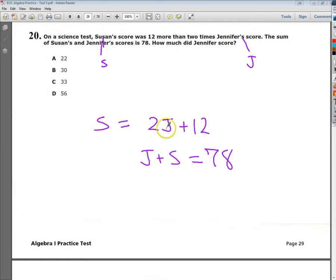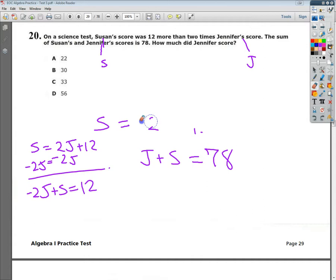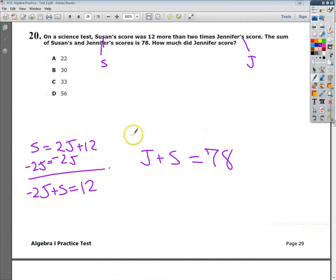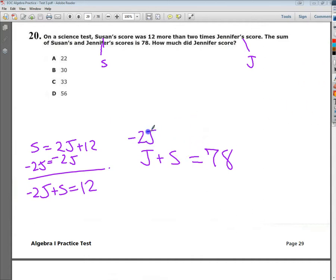In order to do it as a system, I need to move the J over here. So I'm going to take this equation and I'm going to subtract 2J from both sides. And I end up with my standard form of negative 2J plus S is equal to 12. So instead of what I had before, I'm going to do this. Negative 2J plus S is equal to 12.